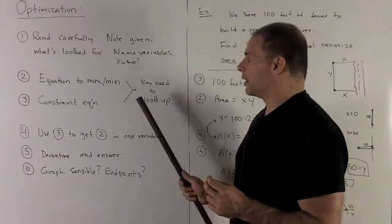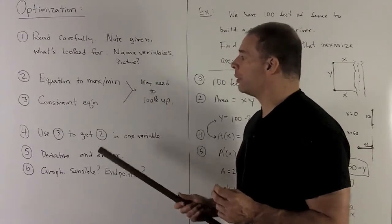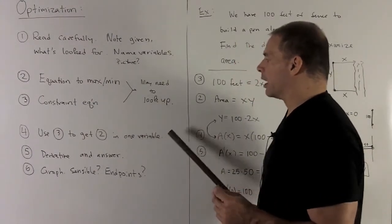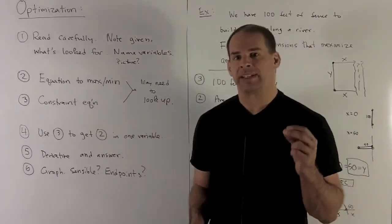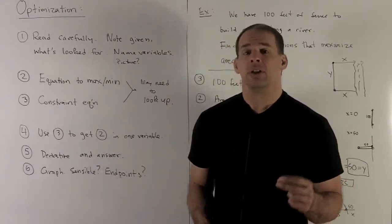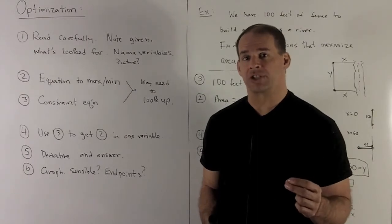Our next step, assuming we've got two and three under control, we're going to use three to get two in terms of a single variable. So that's the idea. Once we get it down to a single variable, we can move on to take a derivative, look for critical points, and then hopefully we have an answer.